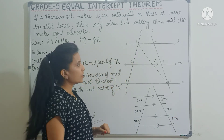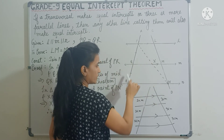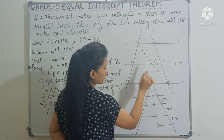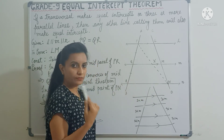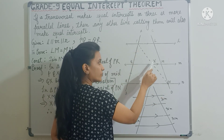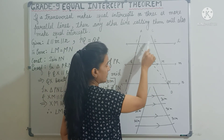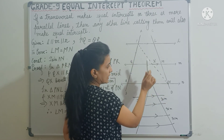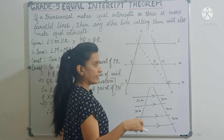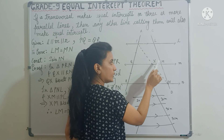How did we prove it? We did the construction — we joined PN. Then we took triangle PRN. In this triangle, Q is the midpoint of PR and QX is parallel to RN. So according to the converse of the midpoint theorem, QX will bisect PN, meaning PX equals XN. Now in the other triangle — triangle MPN — X is the midpoint of PN and XM is parallel to PN. Therefore, from the converse of the midpoint theorem, XM will bisect LN. So LM will be equal to MN.